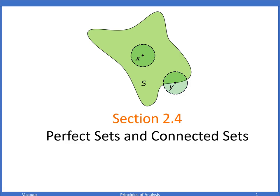Section 2.4. We're going to be talking about perfect sets and connected sets. This is the last section of Chapter 2 of Basic Topology. This section really just consists of two theorems and a really popular set in the mathematical community known as a Cantor set, named after the mathematician George Cantor.